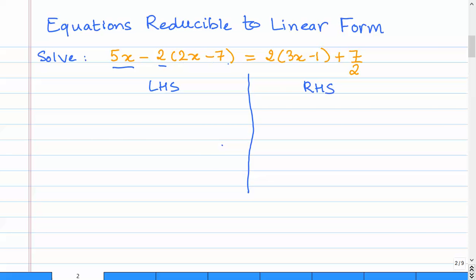So now let's look at the left-hand side first. We have 5x minus, what I will do is multiply this 2 with 2x and then multiply this 2 with minus 7. So 5x, 2 times 2x is, you need to understand that this is minus, so you have 2 times 2 is 4x and then 2 times minus 7 is minus 14.